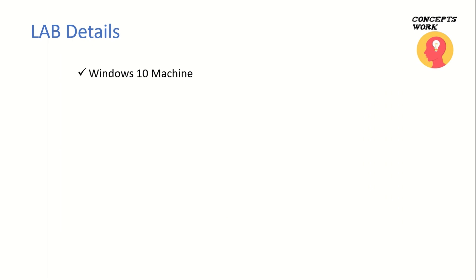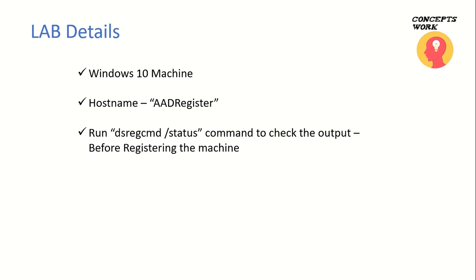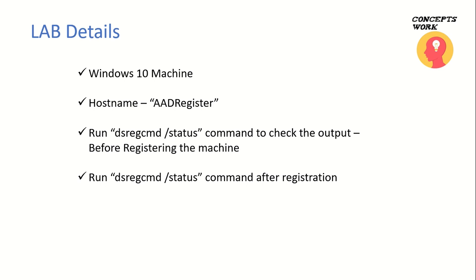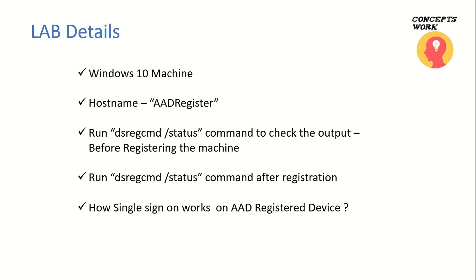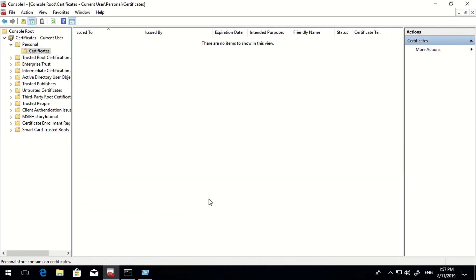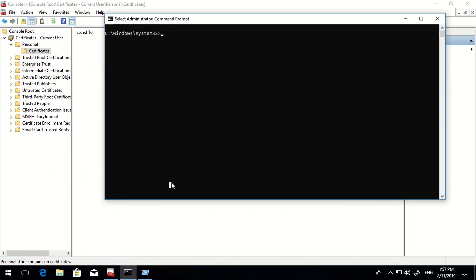For my lab I'm using a Windows 10 machine with the hostname 'aadregister'. I'll run the DSREG command before registering the machine in Azure Active Directory, and then again once registered, to show the difference in endpoints and status. The last thing will be showcasing how single sign-on works on an Azure AD registered machine. Let me first show the current status of that machine.